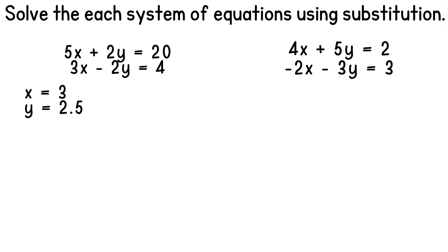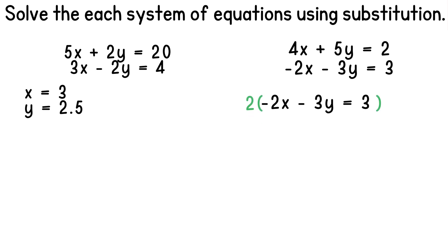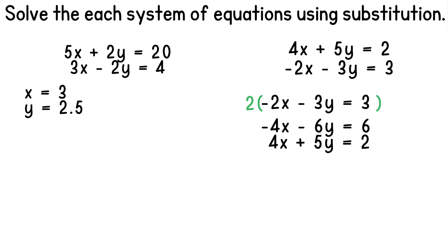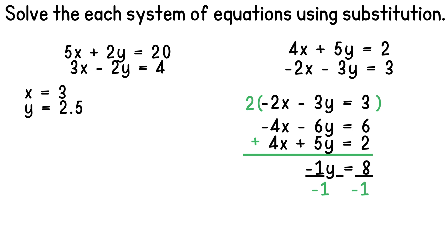Now let's look at our second system: 4x plus 5y equals 2 and negative 2x minus 3y equals 3. When we look at these equations, we see that the coefficients don't match, so we'll have to make them match. We can make negative 2x into negative 4x by multiplying the second equation by 2. Multiplying each term by 2 gives us negative 4x minus 6y equals 6. The negative 4x and positive 4x will cancel, leaving us with negative 1y equals 8. Dividing both sides by negative 1 gives us y equals negative 8.